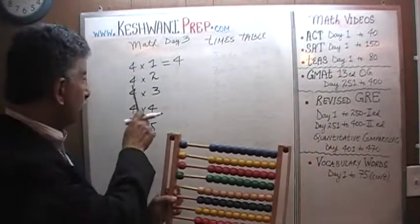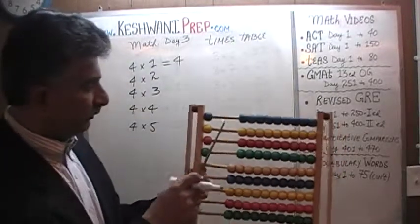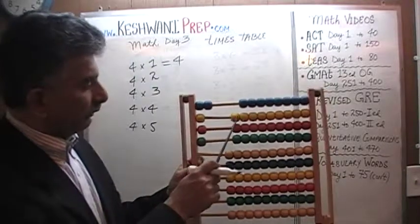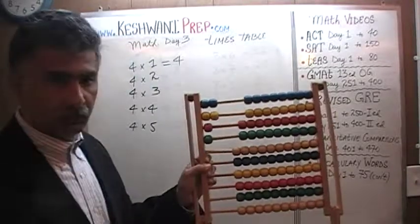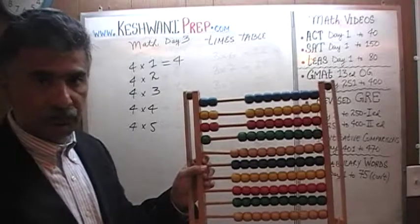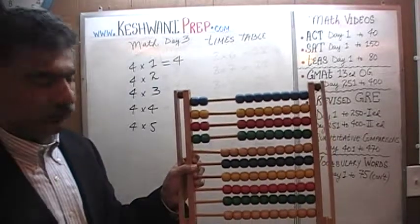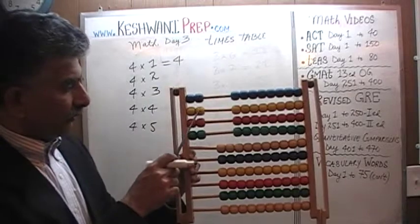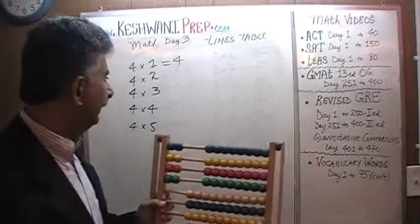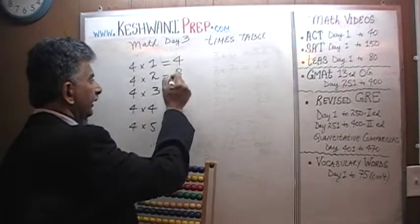What if we had four twos? Four twos are — let's find out. There is one group of two, there's another group of two, that's two twos. There's three twos, and there's four twos. Now we have four twos. Four twos are — let's count: two, four, six, eight. Four twos are eight.